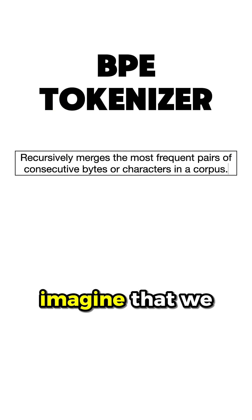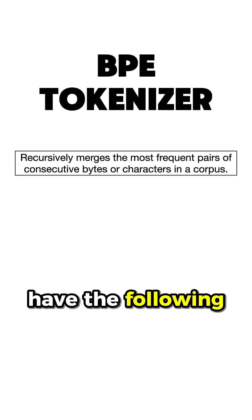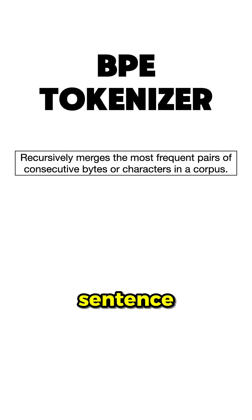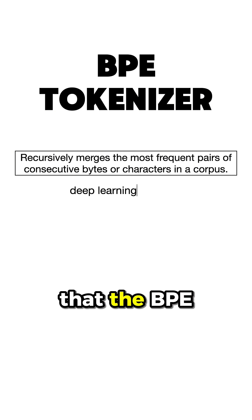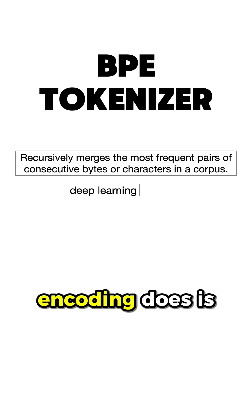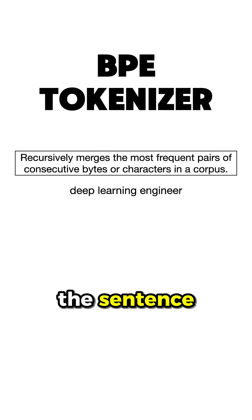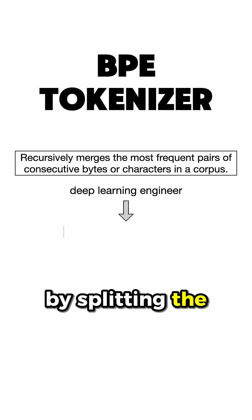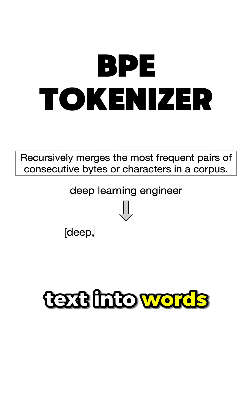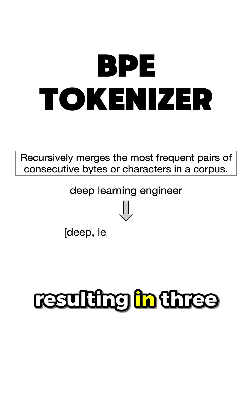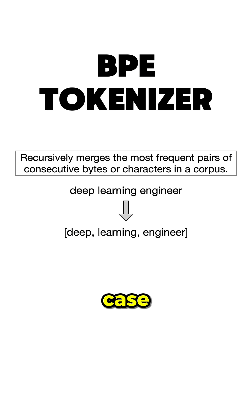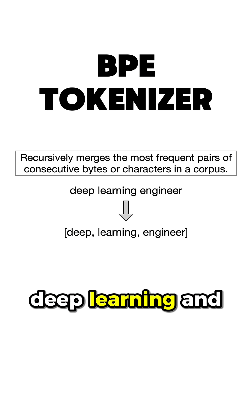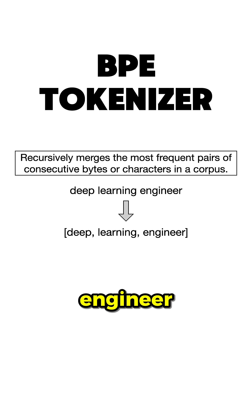For instance, imagine that we have the following sentence: Deep Learning Engineer. The first step that the BPE encoding does is to pre-tokenize the sentence by splitting the text into words, resulting in 3 words with frequency 1 in our case: Deep, Learning, and Engineer.